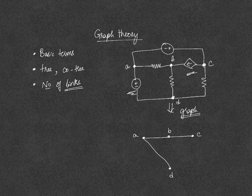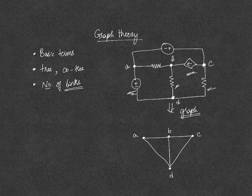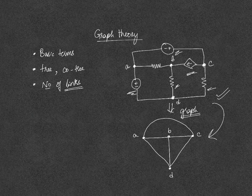From C to D, you have another resistor, which we will draw like this. And from B to D, you have another resistor, so you have another branch here. And this voltage source is from A to C. So for this electrical network, this is the graph.